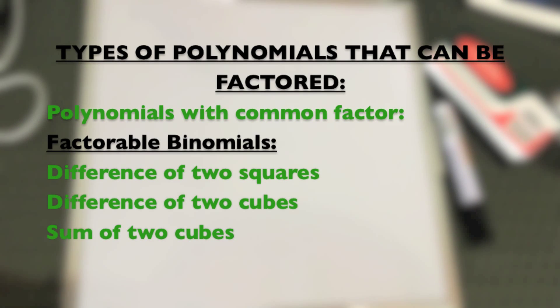Types of polynomials that can be factored are polynomials with a common factor and factorable binomials. Under factorable binomials, there are difference of two squares, difference of two cubes, and sum of two cubes.